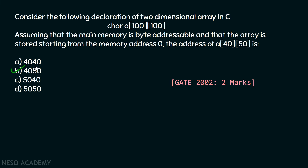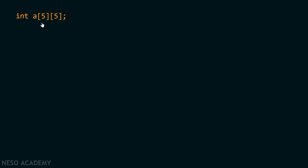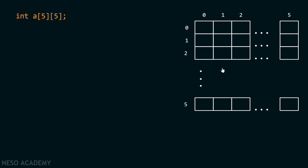You might ask why that formula works — how is it helping us calculate the address of A[40][50]? Let's see why the formula works. Let's say I have an array which contains 5 rows and 5 columns. I have given this example to better understand why the formula works. I want to find out the address of A[2][2], that is the address of this location.